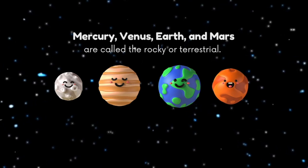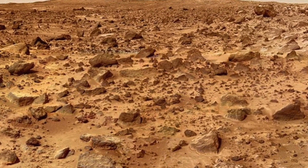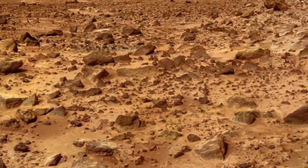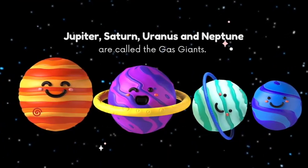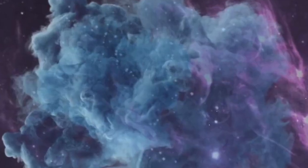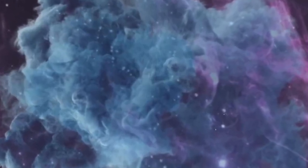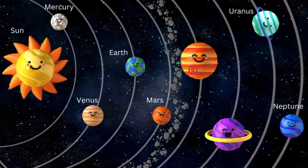Mercury, Venus, Earth, and Mars are called rocky or terrestrial planets because they have more rocky formation, more like mountains. Whereas the big planets like Jupiter, Saturn, Uranus, and Neptune are called gas giants.